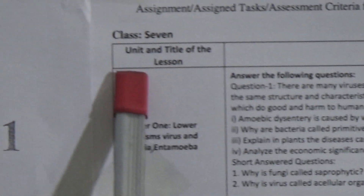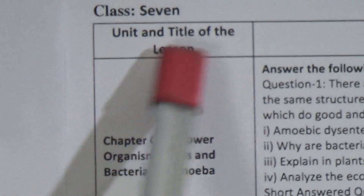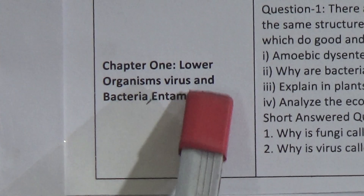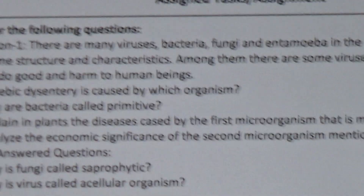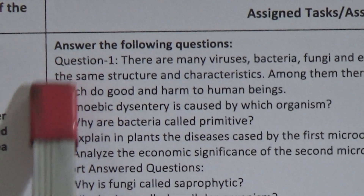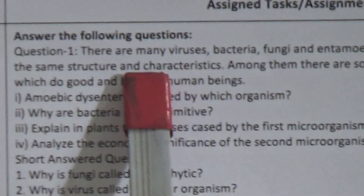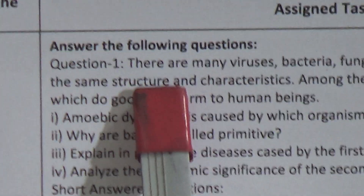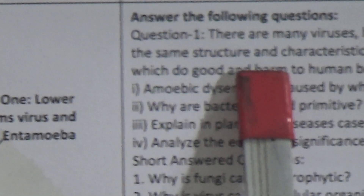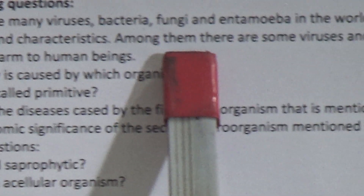You can see the assignment task with its unit and title. The unit and title of the lesson is Chapter 1: Lower Organisms — Virus and Bacteria, and also Amoeba. In the assignment section there is a stem. The stem reads: there are many viruses, bacteria, fungi, and amoeba in the world. Not all of them have the same structure and characteristics.